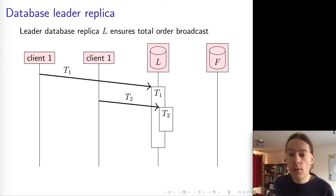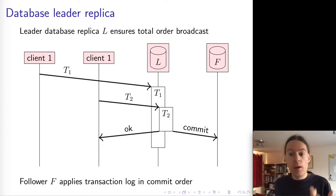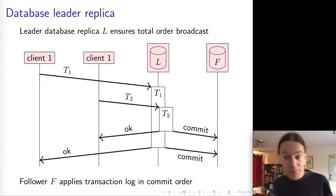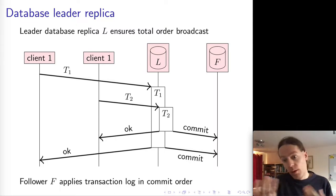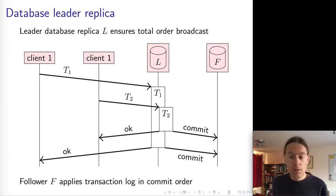Read-only transactions can execute on the followers, but read-write transactions must execute on the leader. Transactions may execute concurrently, but they will commit in some total order, and this commit order is crucial. When a transaction commits, a record is appended to the commit log containing the data changes made by that transaction. This commit record is sent to all followers via Total Order Broadcast. All followers apply the transaction commits and data changes in commit order, so the leader and all followers go through the same sequence of state transitions — again using the same principle as state machine replication.